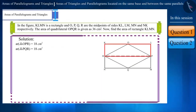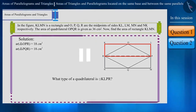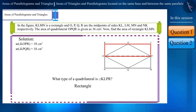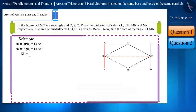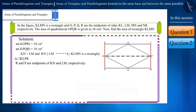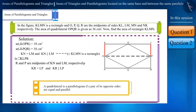Friends, now if we look at quadrilateral KLPR, can you tell what kind of quadrilateral it is? Pause the video and think about it. It is given that KN is equal to LM and KN is parallel to LM because quadrilateral KLMN is a rectangle. R and P are the midpoints of KN and LM respectively. Therefore, KR is equal to LP and KR is parallel to LP. In quadrilateral KLPR, a pair of opposite sides is equal and parallel, so quadrilateral KLPR is a parallelogram.